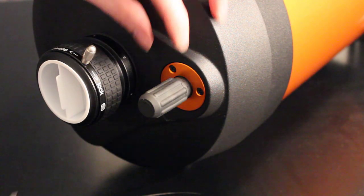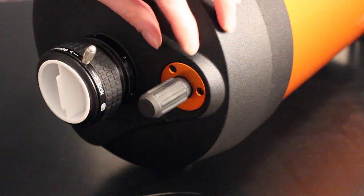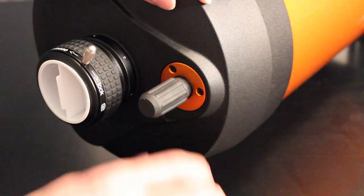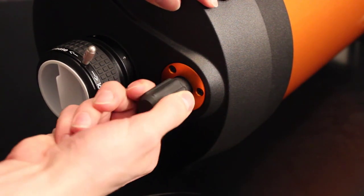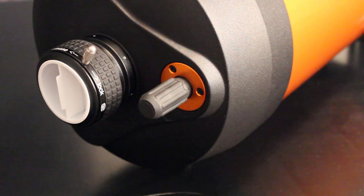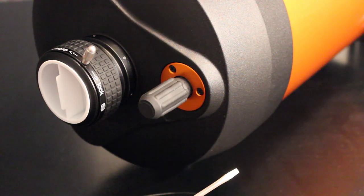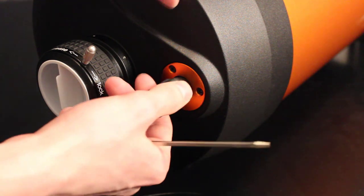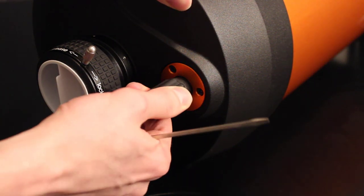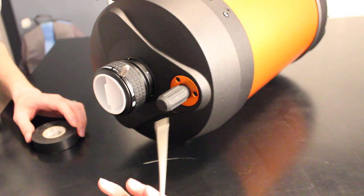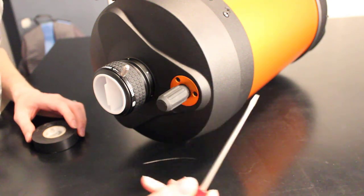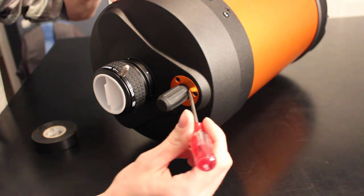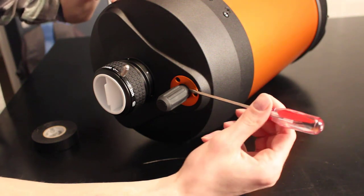To get things started, you'll want to remove the stock rubber focuser cover. And if you can't do this with your fingers just by using force, you'll need to use a multi-tool or a flathead screwdriver or pliers or something to get it off. I think it just depends on how old your scope is or how much you use the stock focuser and how hard this is to get off. So what I like to do is use a small flathead screwdriver to kind of get inside the focuser a little bit and then pry the rubber piece out.